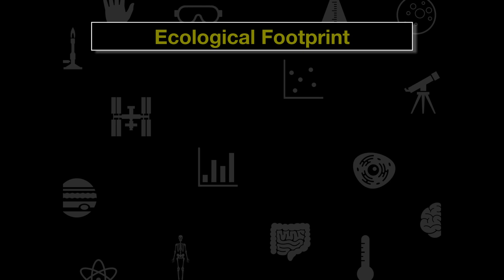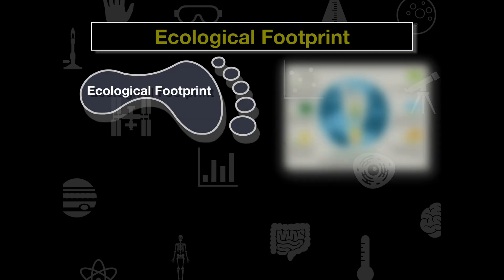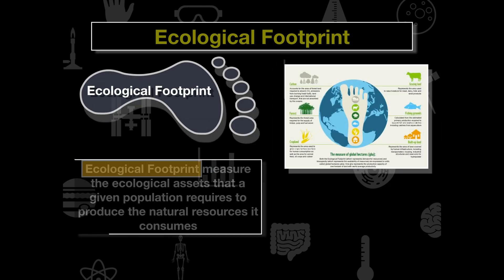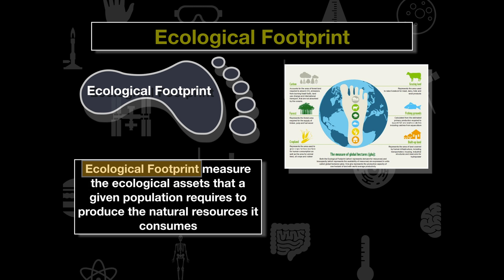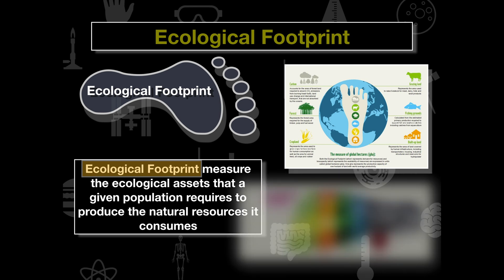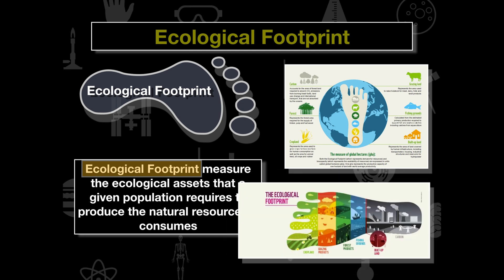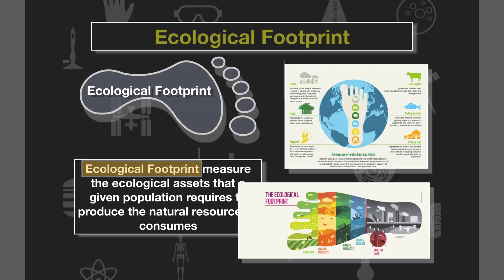So an ecological footprint — what is it? An ecological footprint is a measure of the ecological assets that a given population requires to produce the natural resources it consumes. Resources we consume as a society include cropland, grazing products, forest products, fishing products, land use, and energy use.